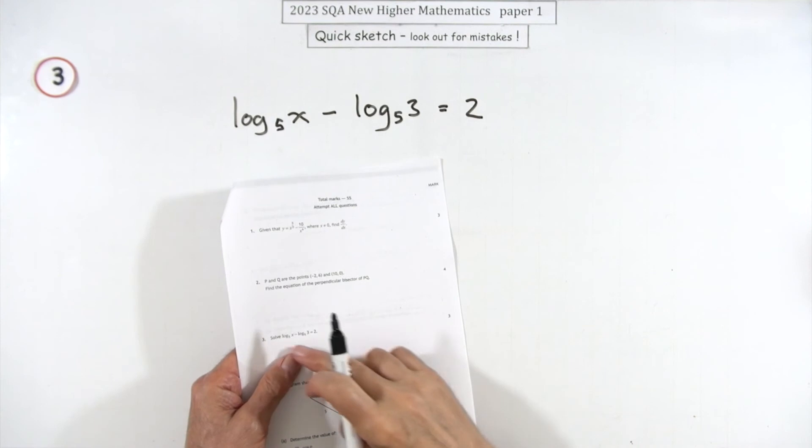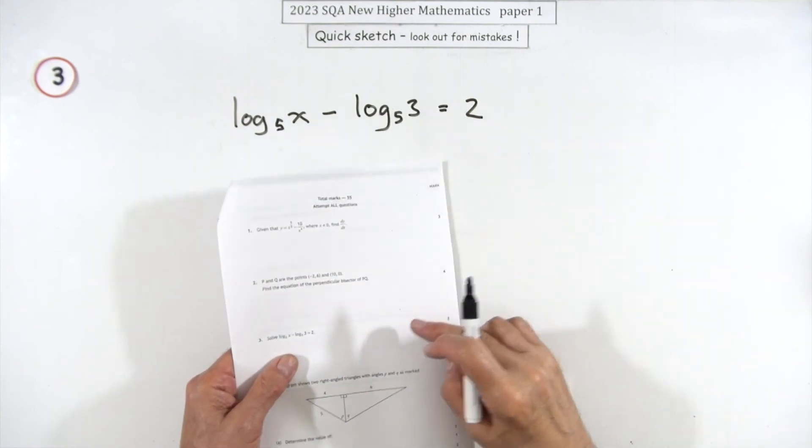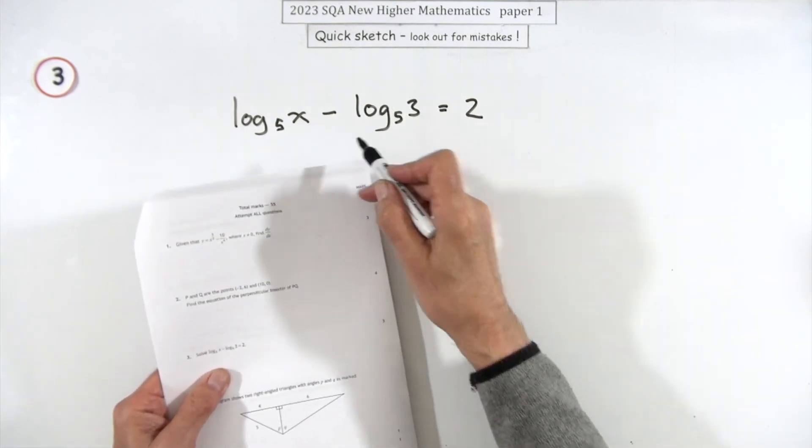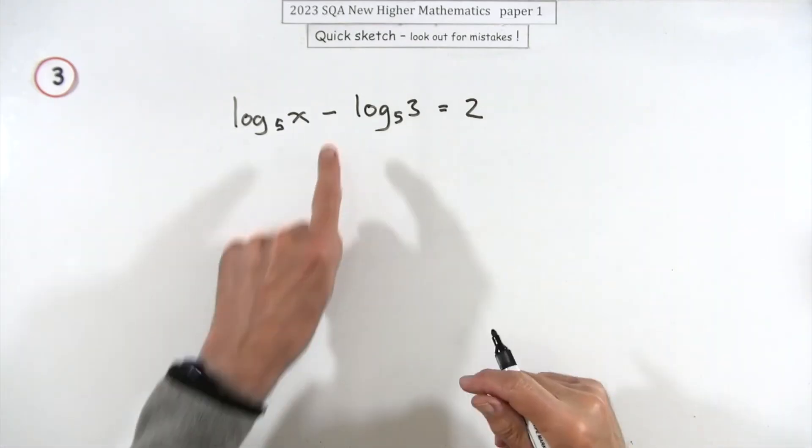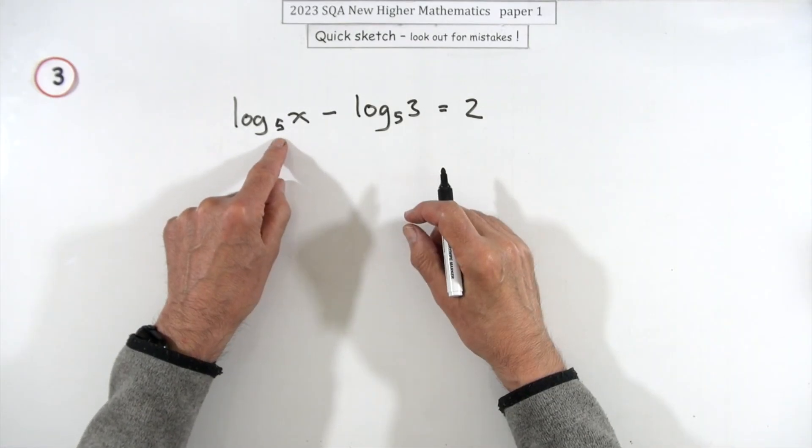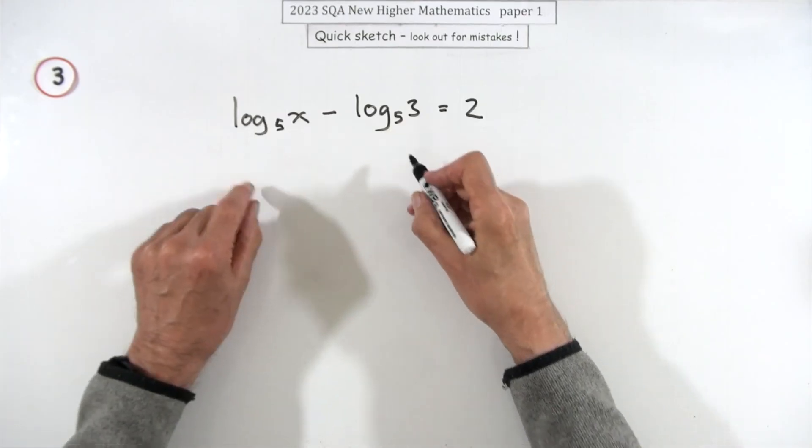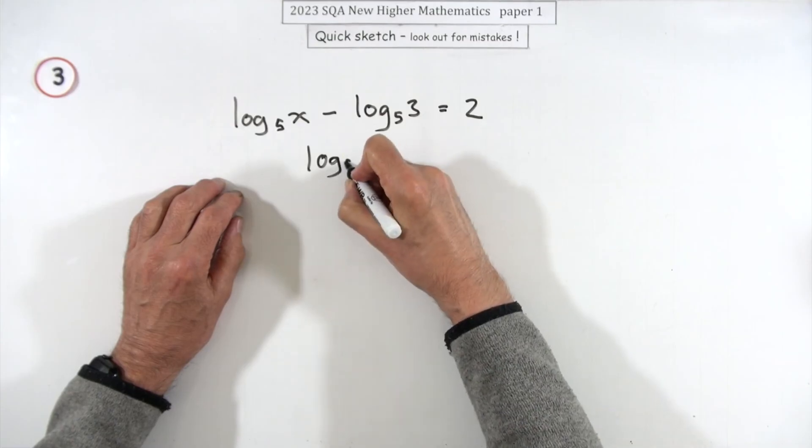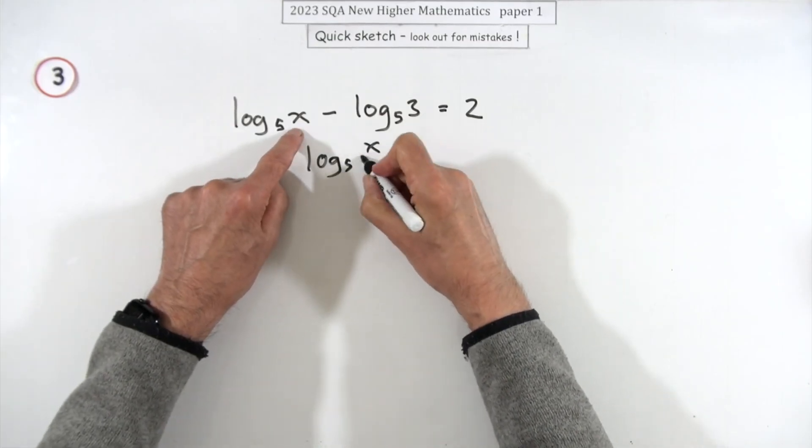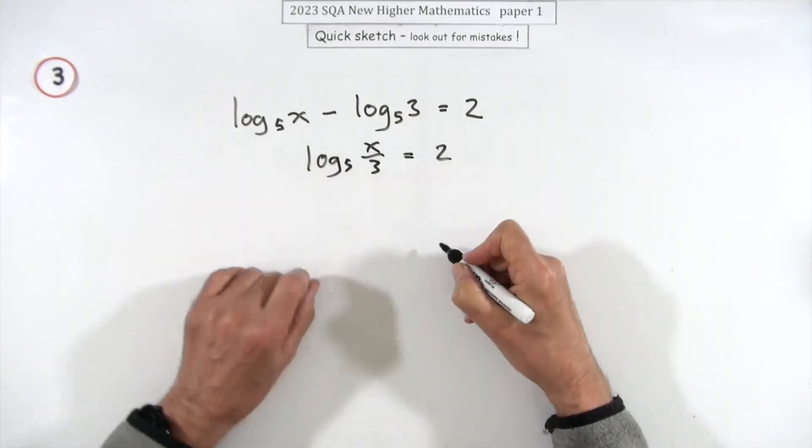Number three for three marks: solve this little log equation log base 5 of x minus log base 5 of 3 comes to 2. Well I don't know what power 5 that is or what power 5 that is, but I know that if I subtract them I'll have the single logarithm of the quotient of x over 3.